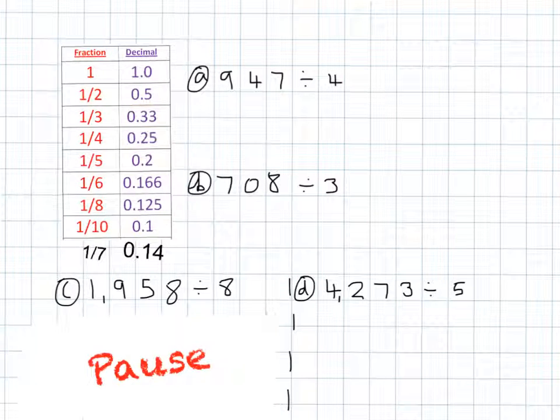Now you're on your own. Work out the answer to these four divisions. And when you've got the remainder, convert the remainder into a fraction. Simplify it if you need to. And then convert that fraction into a decimal number, so you've got a decimal number as your answer. Away you go.